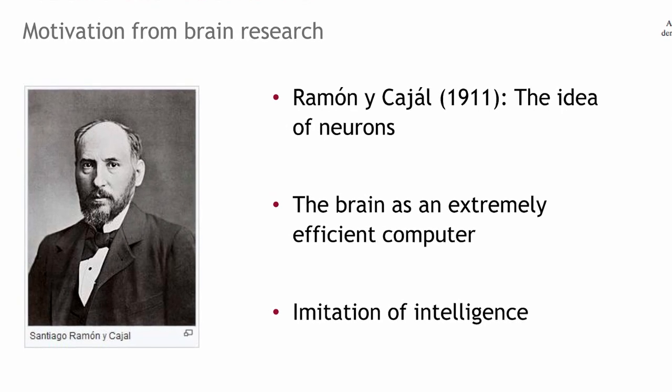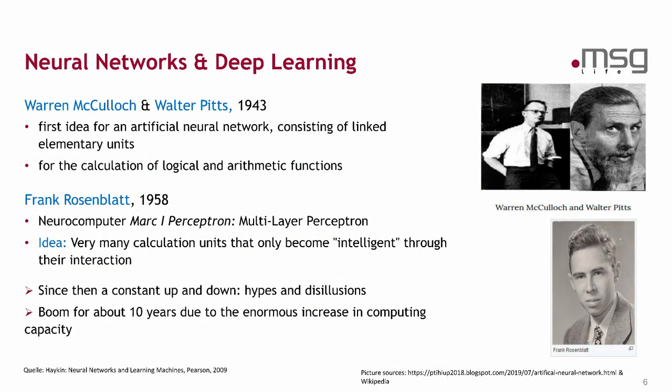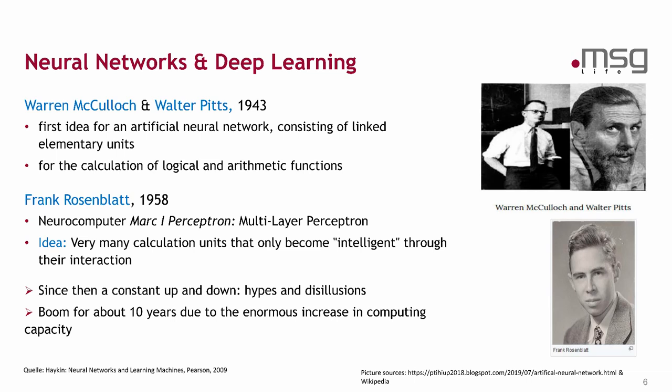A few years later two men, Warren McCulloch and Walter Pitts, had the first idea to use artificial neural networks for calculation of logical and arithmetic functions. And 15 years later Frank Rosenblatt was the first who built a neurocomputer, the so-called Mark 1 Perceptron. He was the first neurocomputer which uses the information about the communication of nerve cells in the brains. And then we get the first boom of artificial neural networks.